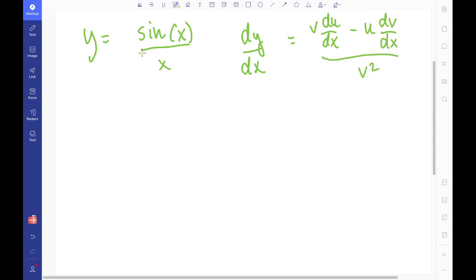So if you say that u is your function on the top, u is sine x, v is x, then differentiating this, you will get x cos x minus 1 times sine x on the top. And this would all be over x squared on the bottom. So you're setting this equal to zero to find the maxima and minima. And the problem is, when you set this equal to zero, you don't have to worry about the denominator anymore.